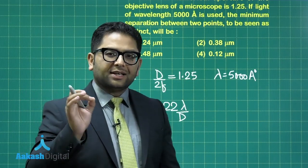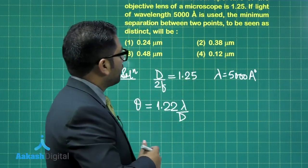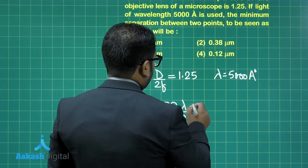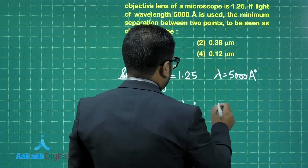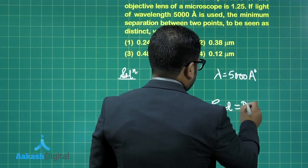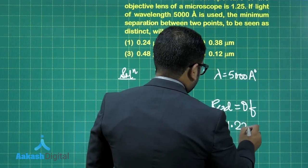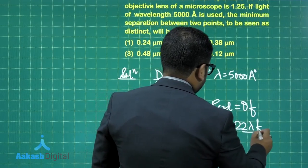But this time, I need to calculate the minimum separation. So to go for the minimum separation between the two objects, the required part would be theta multiplied by F, and that will be 1.22 lambda F divided by D.